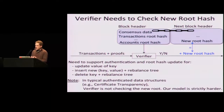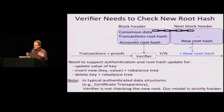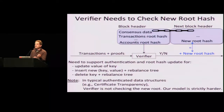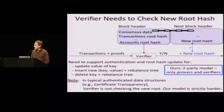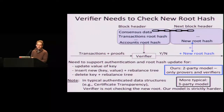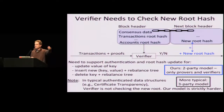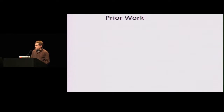To emphasize that this is not typical: you've seen authenticated data structures before, like dynamic authenticated data structures in certificate transparency, where we record the history of changes. In those systems, the verifier is typically not checking the new root — the new root is given by someone else. Here, the verifier is actually computing the new root. This model is called the two-party model — only provers and verifiers — as opposed to the more traditional three-party model, where a third party gives you the new root. Nobody is trusted.